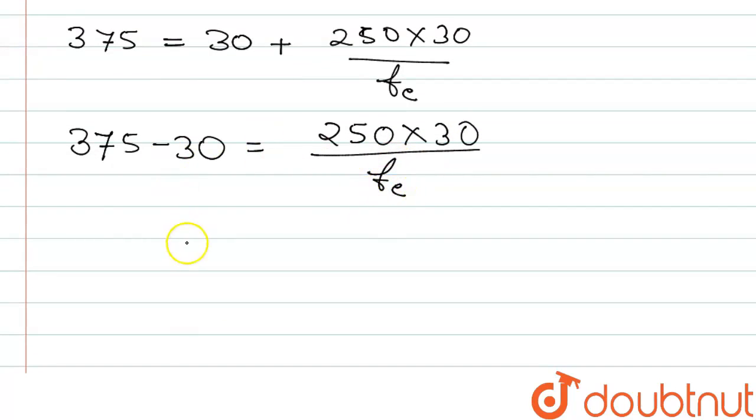If we take fe to the other side, we can write fe equal to 250 into 30 divided by - if we solve this, this will be 345.